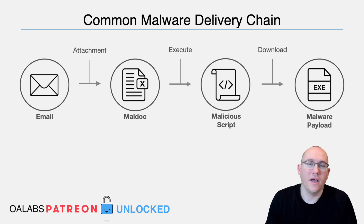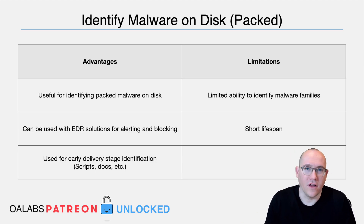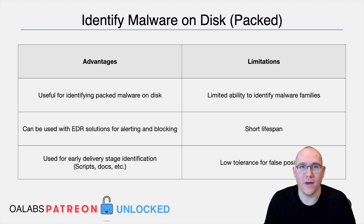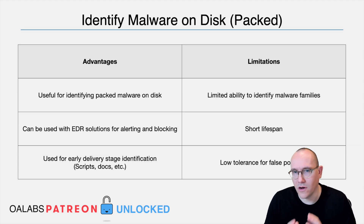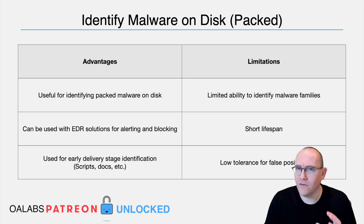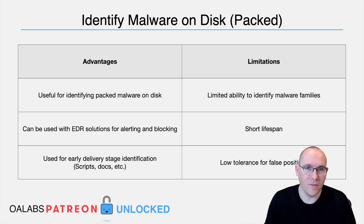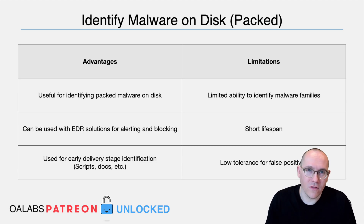There are two main drawbacks of these types of rules. Number one, false positives are really not a good thing — they can have serious real-world impacts, especially if these rules are being used to block files with an EDR product or to generate alerts for a SOC team. The other drawback is that these rules can't tell you very much about what's happening; they usually just tell you there's something bad, much like a generic AV signature.